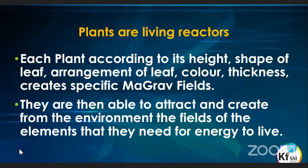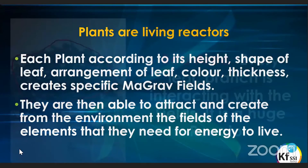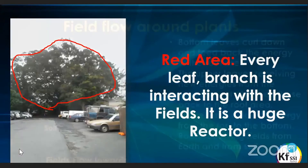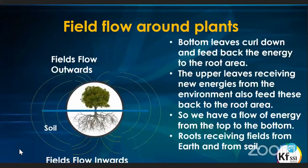Each plant, according to its height, shape, leaf arrangements, color, and thickness, creates different magnetic field strengths. They are then able to attract and create from the environment the fields of the elements they need for their energy. Coming back to the picture of the beautiful tree, that whole area is one massive reactor interacting with the fields around it. We have to look a bit deeper into this field flow that we see around plants.